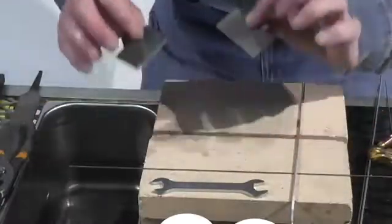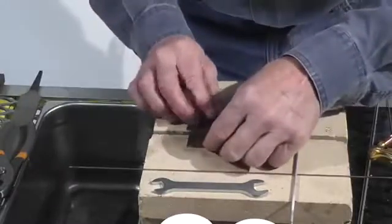You can go from four thousandths all the way up to three-eighths thick. Real thin sheet metal. This right here is about 20 gauge.